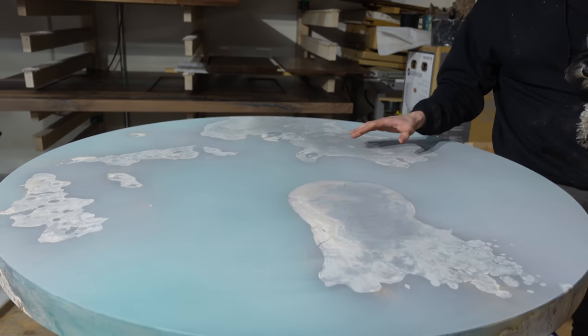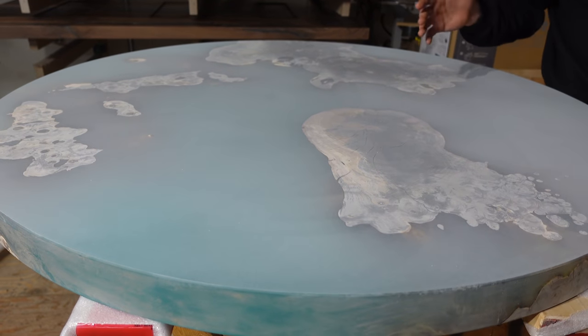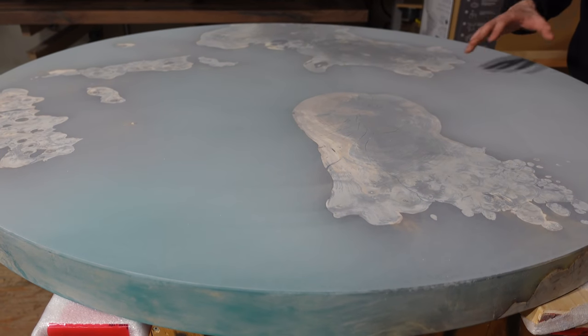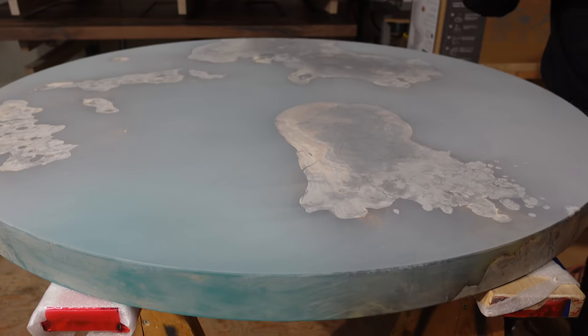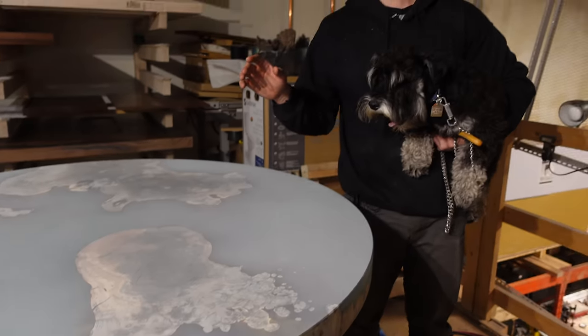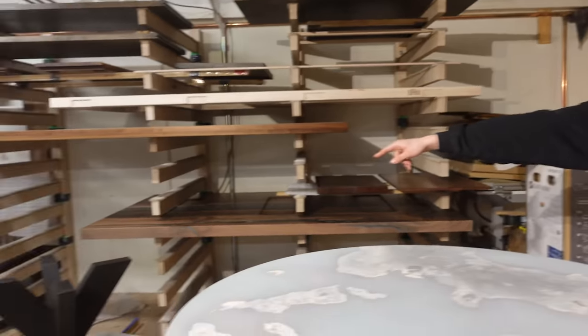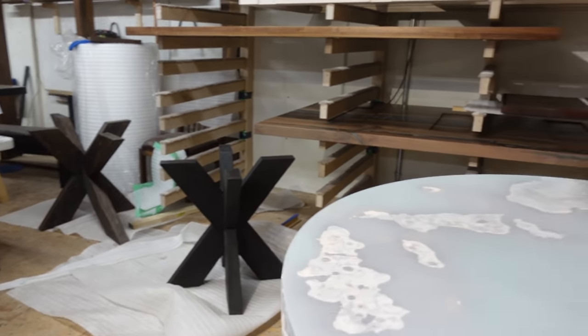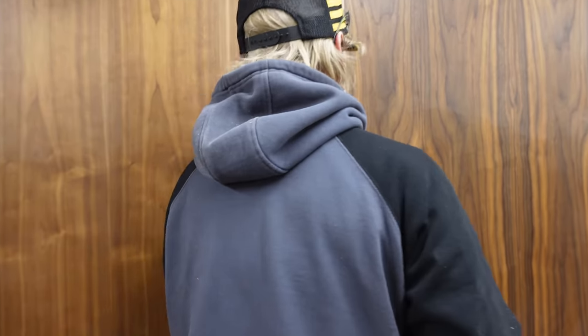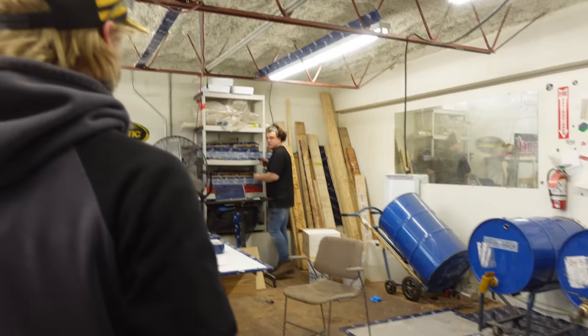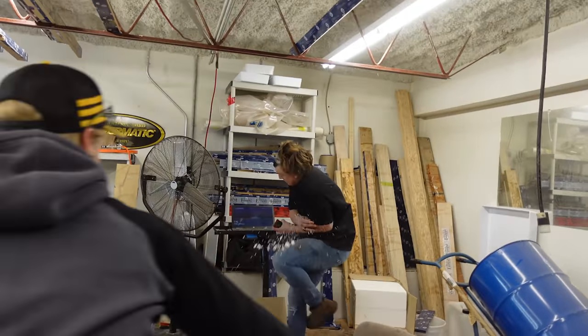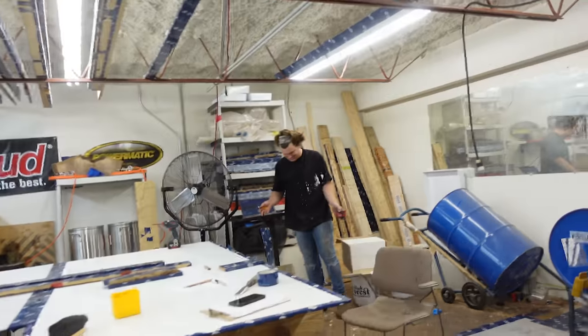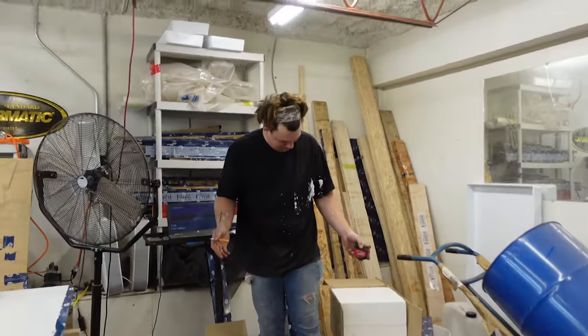Next week, as well, we're going to show you guys this table. It doesn't look like much right now, but it's buckeye burl with a turquoise resin. We've got the whole process filmed for this. It's also getting one of those X bases right over there. Stay tuned for next week, and we'll be sharing this with you guys. I hope you guys enjoyed, and we'll see you then.